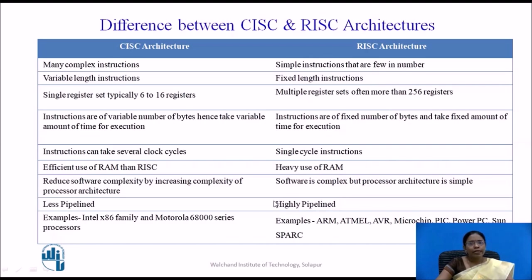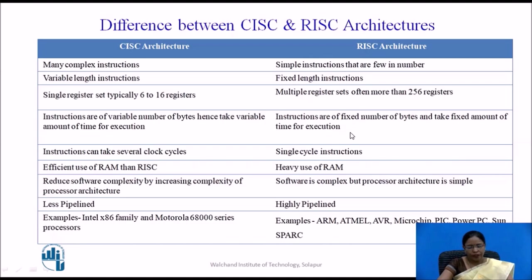Examples of CISC architecture include the Intel x86 family and Motorola 68000 family. Examples of RISC architecture include ARM, Atmel, AVR, Microchip, and SPARC.